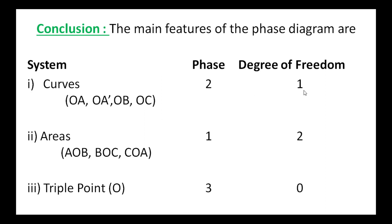At the triple point, since all three phases are in equilibrium, P = 3. Applying the phase rule: F = 1 minus 3 plus 2 = 0, so the system is invariant at the triple point. For the areas, P = 1, so F = 2 (bivariant). This completes the water system phase diagram explanation.